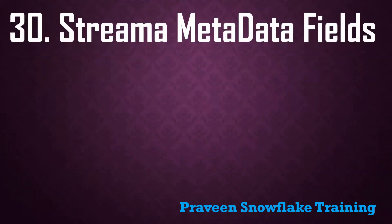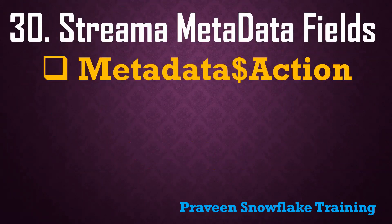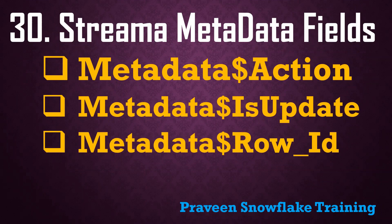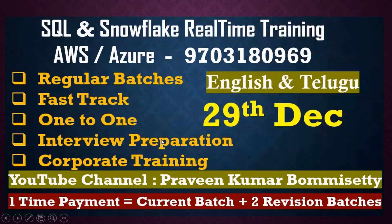What are the stream metadata fields? The important metadata fields available in a Snowflake stream are: METADATA$ACTION, METADATA$ISUPDATE, and METADATA$ROW_ID. By using these fields you can determine whether an INSERT, UPDATE, or DELETE operation was performed on the source table.